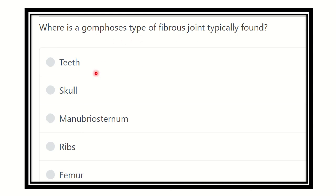Here are the options: teeth, scalp, manubriosternum, ribs, and femur. So it is one of the direct questions — the gomphosis type of fibrous joint, typically found where?